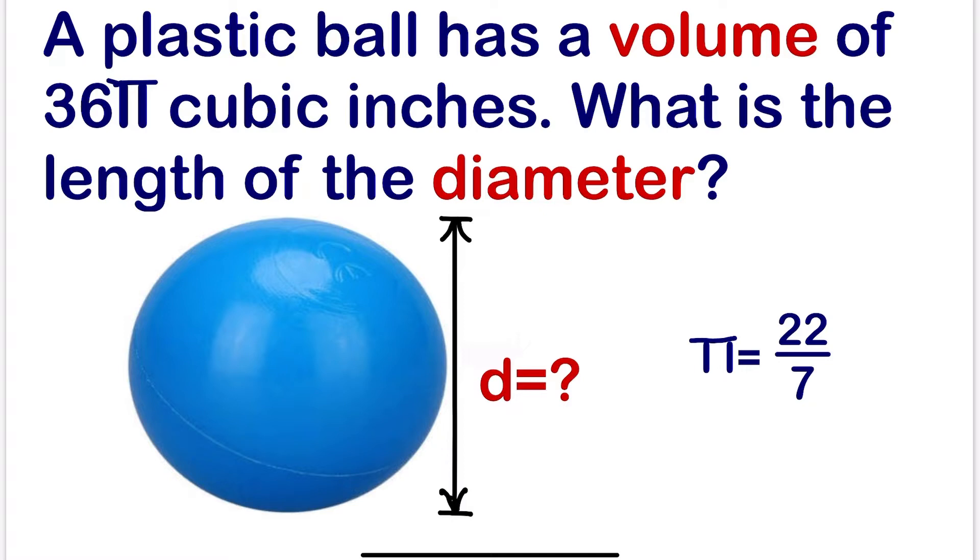We are given the volume, which is 36π cubic inches. We are going to write the formula of volume, then substitute in order to calculate the diameter.